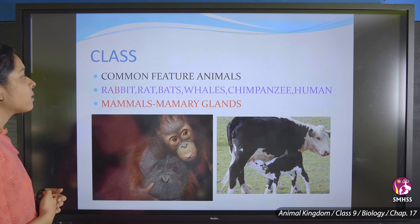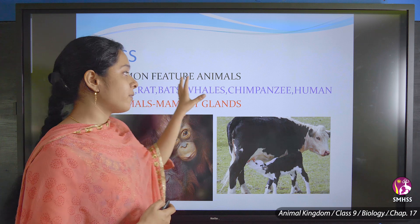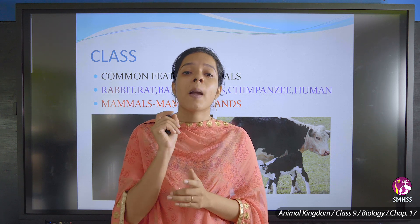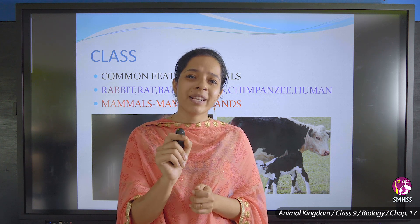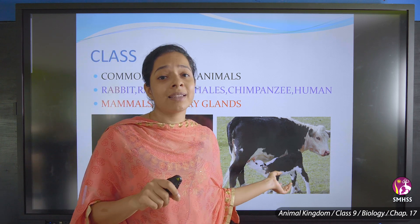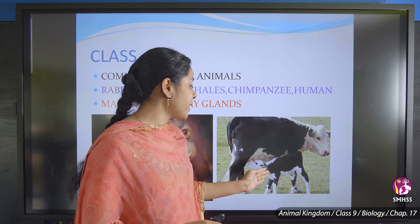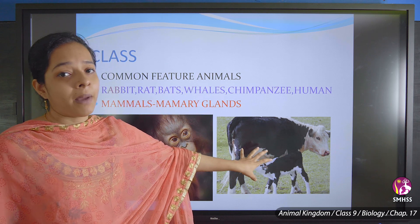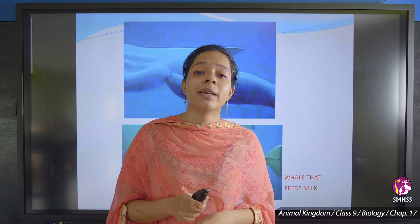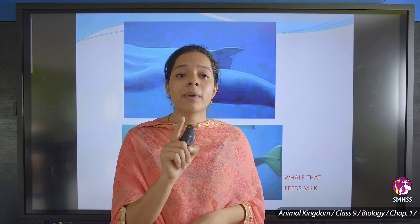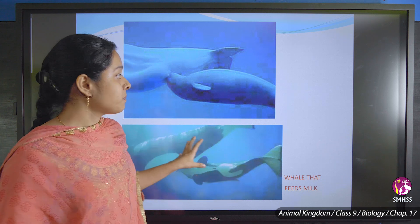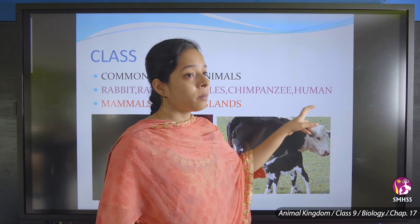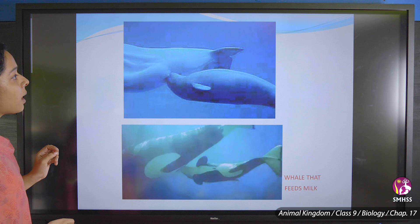The next category is Class. All organisms in a class share a common feature — mammalians. Mammalians have mammary glands, which are organs used to feed young ones. For example, cows feed their calves, monkeys feed young monkeys. Even the whale — the only sea animal with mammary glands — feeds its young. Examples include rabbit, rat, bats, whales, chimpanzee, and humans.